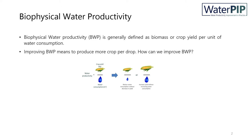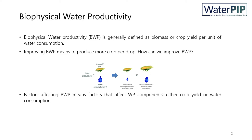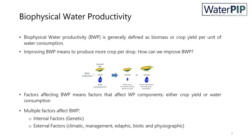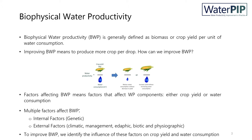How can we improve it? We can improve water productivity either by reducing crop water consumption without decreasing crop yield, or by increasing crop yield without increasing water consumption. When we talk about factors affecting water productivity, it means factors that actually affect either crop yield or water consumption. There are multiple factors that affect water productivity: some are internal factors related to crop genetics, and others are external factors such as climatic, management, edaphic, biotic, and physiographic. In order to improve water productivity, we have to identify the influence of these factors on crop yield production or water consumption.